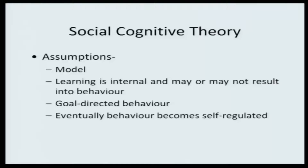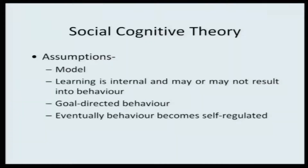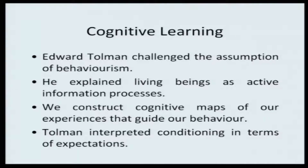The third assumption in social cognitive theory is that behavior is goal-directed — you select a model and try to imitate them because you want to be like them. Eventually, behavior becomes self-regulated, and all you want to achieve is a self-regulatory state. Edward Tolman challenged the assumptions of behaviorism, explaining that living beings are active information processors. We construct a cognitive map of experience, and it is this cognitive map that guides our behavior.